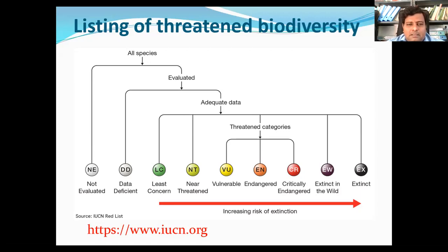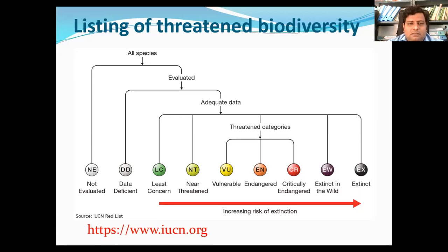Another category is Least Concerned, designated LC. This category contains species that are pervasive and abundant after careful assessment, meaning their population is not threatened. They are found in abundant numbers across major geographic regions and are considered least concerned.